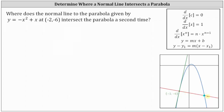To find the equation of a normal line, we'll first have to find the slope of the tangent line by evaluating the derivative of y equals negative x squared plus x at x equals negative two. This will give us the slope of the tangent line. And since the tangent line is perpendicular to the normal line, the slope of the normal line is going to be the negative reciprocal of the slope of the tangent line. So let's determine the derivative so that we can then determine the slope of the tangent line and then the slope of the normal line.